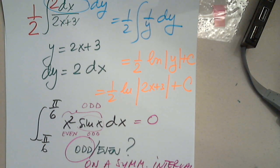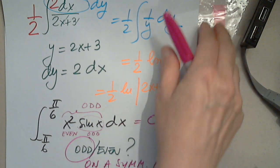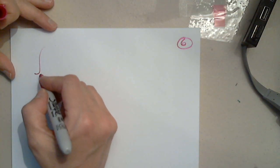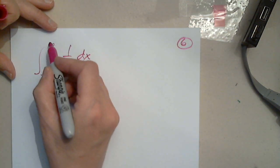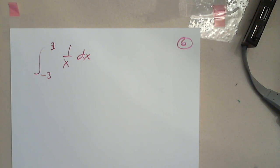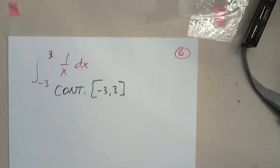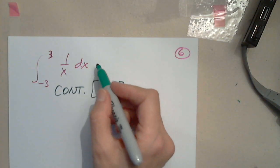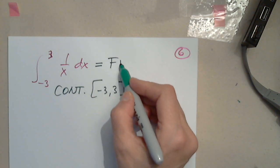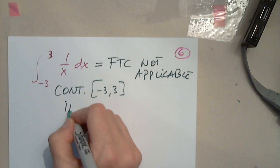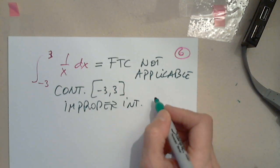Is the next one zero as well? Careful. The next one is from negative 3 to 3 of 1 over x dx. What do we check first since it's a definite integral? It has to be continuous on the interval negative 3 to 3. Otherwise, FTC is not applicable. And it's not continuous — 1 over x is not defined at 0, which is in the interval. FTC: not applicable. This is called an improper integral, which you'll see in Calc 2.